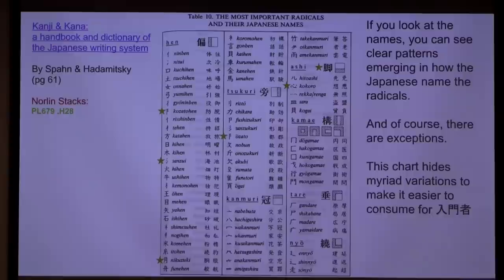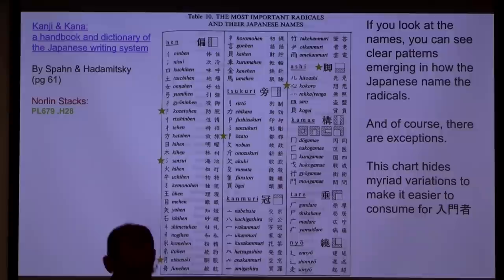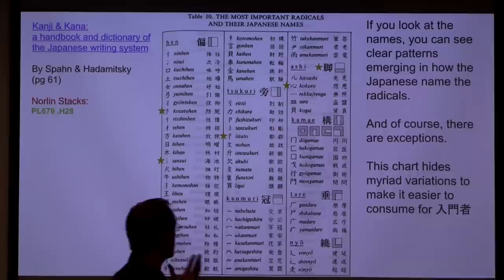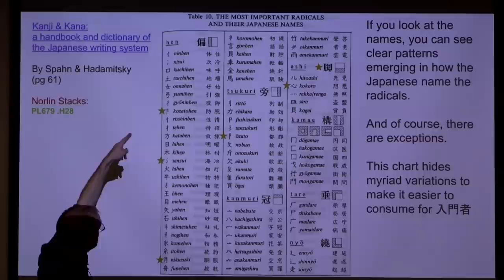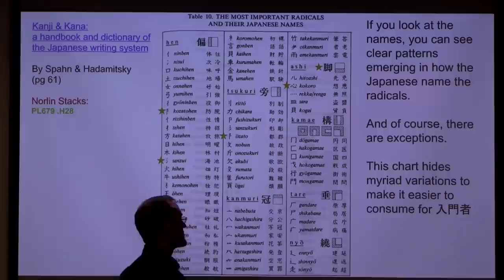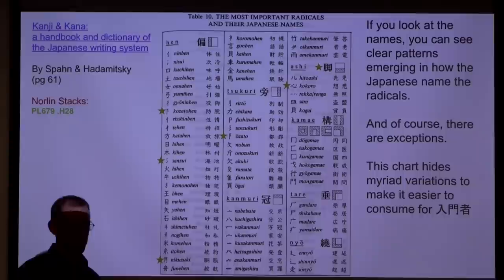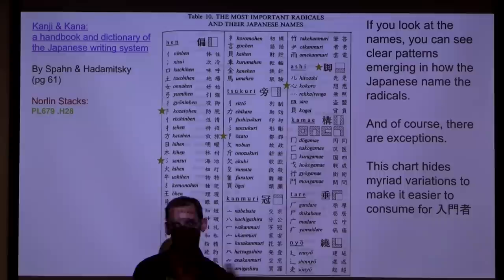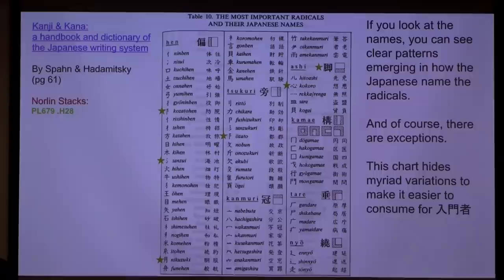Here's the full set of naming conventions on the handout. For the hens you've got 'nimben,' 'nisui,' 'kuchihen,' 'tuchihen,' 'onnehen,' 'yumihen,' 'yoninben,' 'kozatohen,' 'nishinben,' 'tehen,' 'katahen' — the word 'hen' keeps appearing in the names. For first year students, you don't have to memorize all these names, but just be aware that this positioning system is very solidly in the minds of Chinese and Japanese speakers. This awareness is one of the secrets to how they manage to consume so many characters at such a high speed.